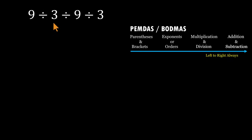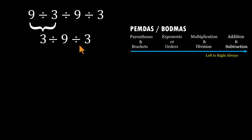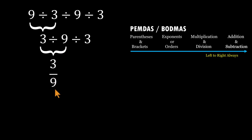Start at the far left. 9 divided by 3 equals 3. Now bring everything else down — we're left with 3 divided by 9 divided by 3. Again, move left to right. 3 divided by 9 can be written as 3 over 9.